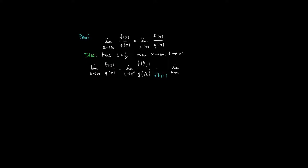So we get, as a limit, the limit of t to 0+, and we take a derivative with respect to t. We now have a composite function, so we take the derivative: minus 1/t² as the derivative of 1/t, times the derivative of f at 1/t. The same we do in the denominator. We see that twice we get a term minus 1/t², and they cancel. So we're left with the limit of t to 0+ of f'(1/t) divided by g'(1/t).